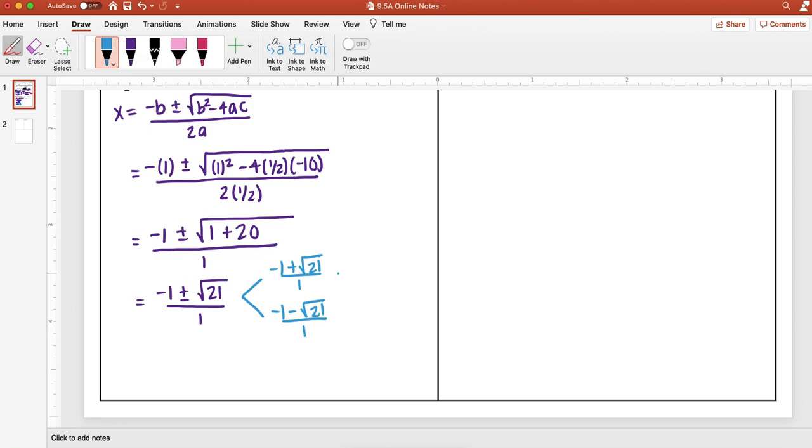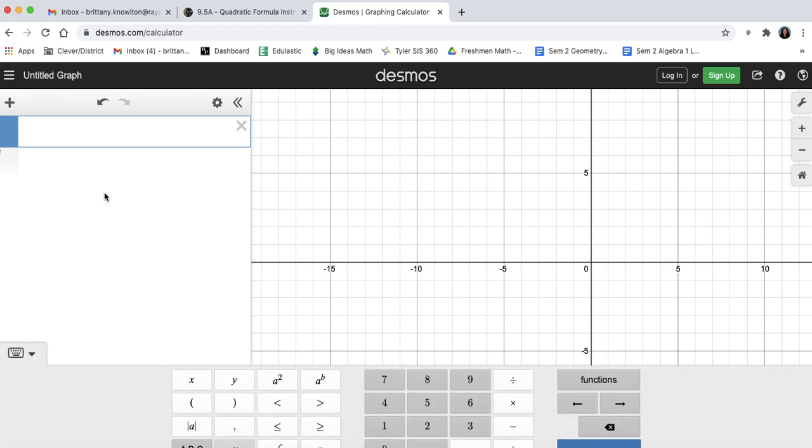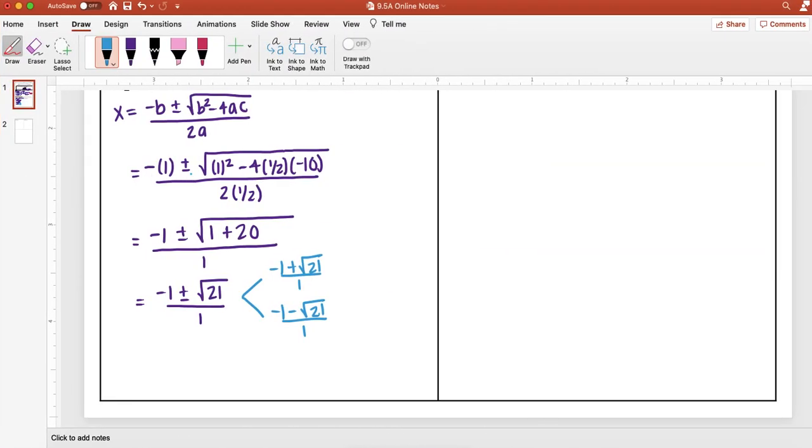And so here I can use Desmos to help me answer this. So I go over to Desmos, I have negative 1 plus, to get that square root, I'm going to click this radical button. And then I'm going to divide all of that by 1, which will give me the same thing. And so rounding to the nearest tenth, I'm going to get 3.6 for that first part.